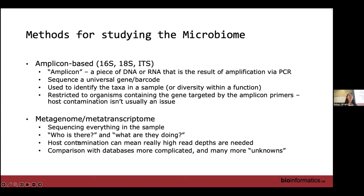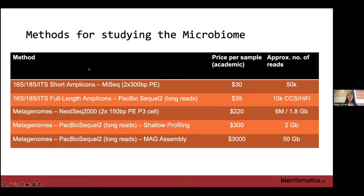Metagenome or metatranscriptome is really sequencing everything in the sample — you can look at both who is there and what they're doing: taxonomy as well as function. The main drawback is that host contamination can mean really high read depths are needed. For example, if you're sequencing feces, it has high microbial content, so host contamination is less of a concern. But with saliva, you get a lot more human reads and need to sequence to much greater depth. The comparison with databases is also more complicated.